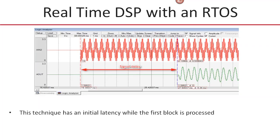One disadvantage of this system is introduced by the block processing method. There's no output data until the first block of data has been processed, so there's a latency from when we start sampling the signal to when we start outputting data — a multiple of the block size. By decreasing the block size we can minimise that latency, but then the DSP algorithm runs more frequently and uses more processing time. It's a trade-off between minimal delay and the impact of the DSP algorithm on the system.